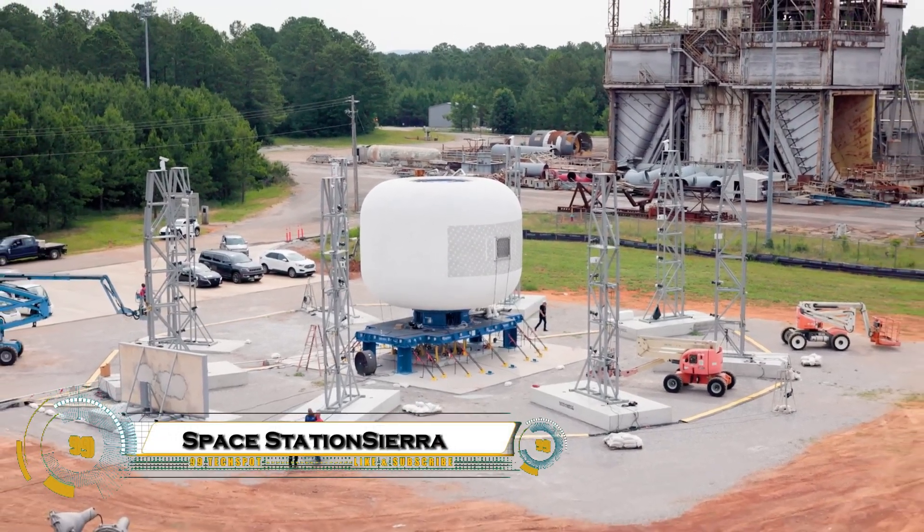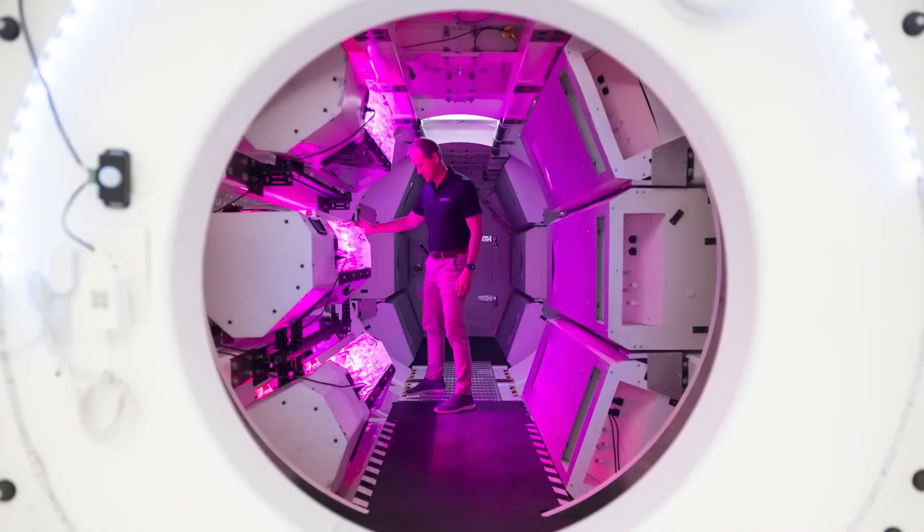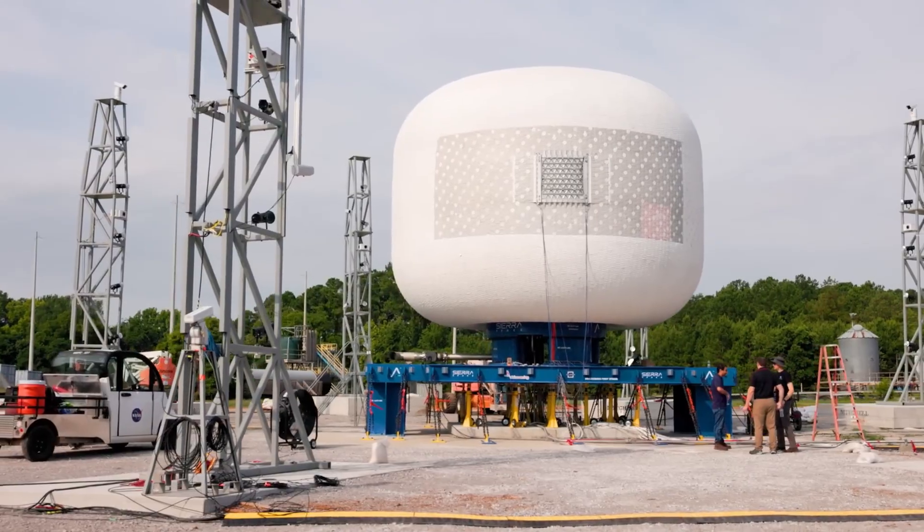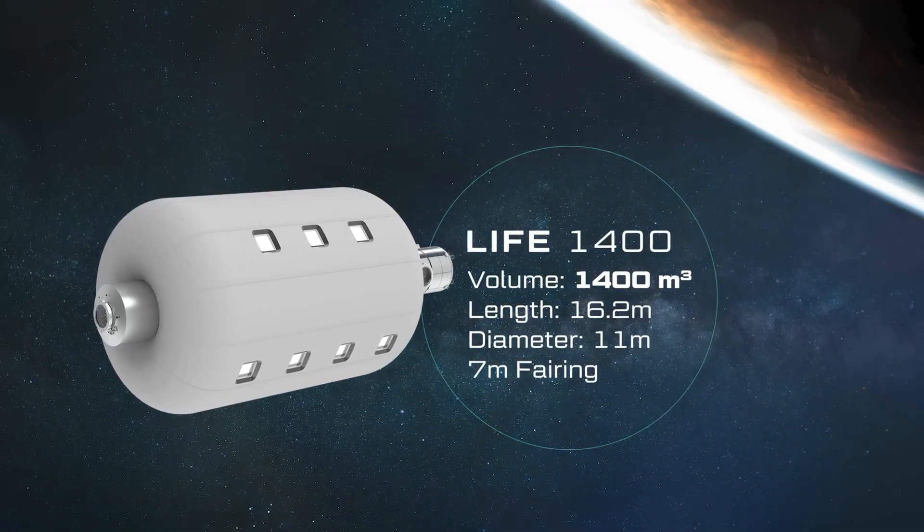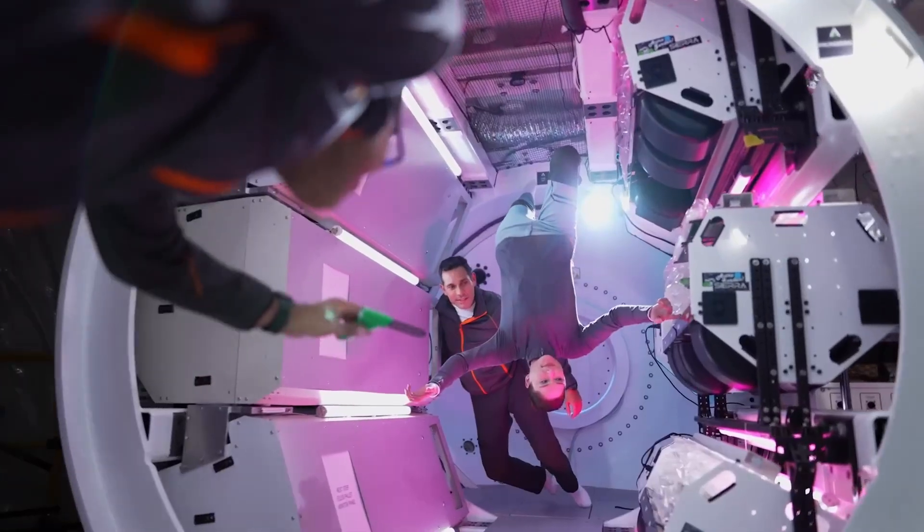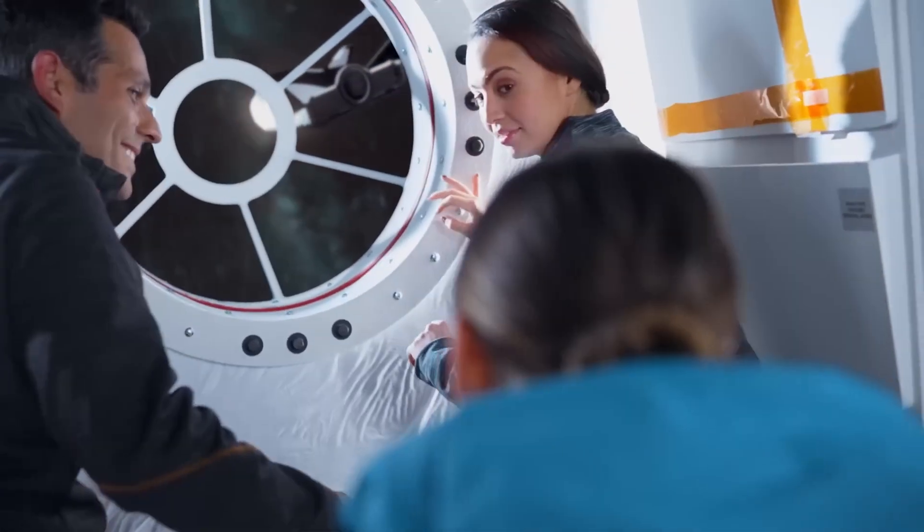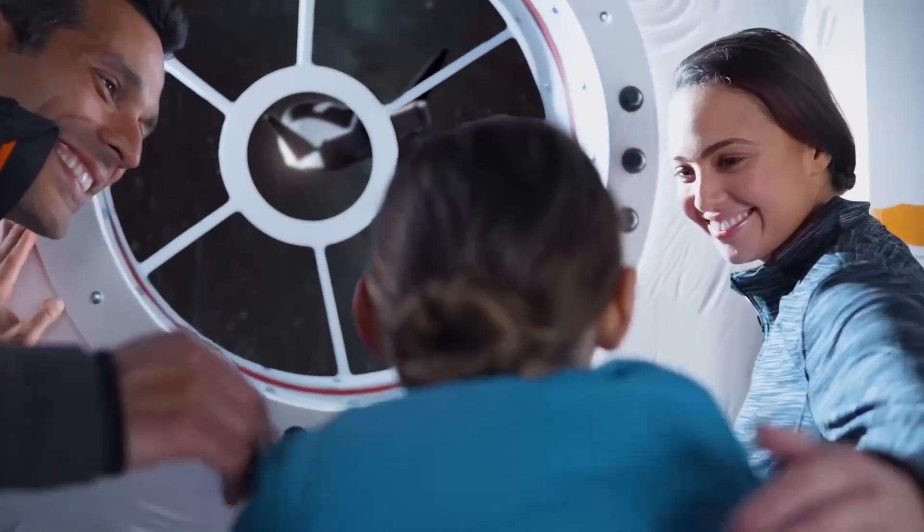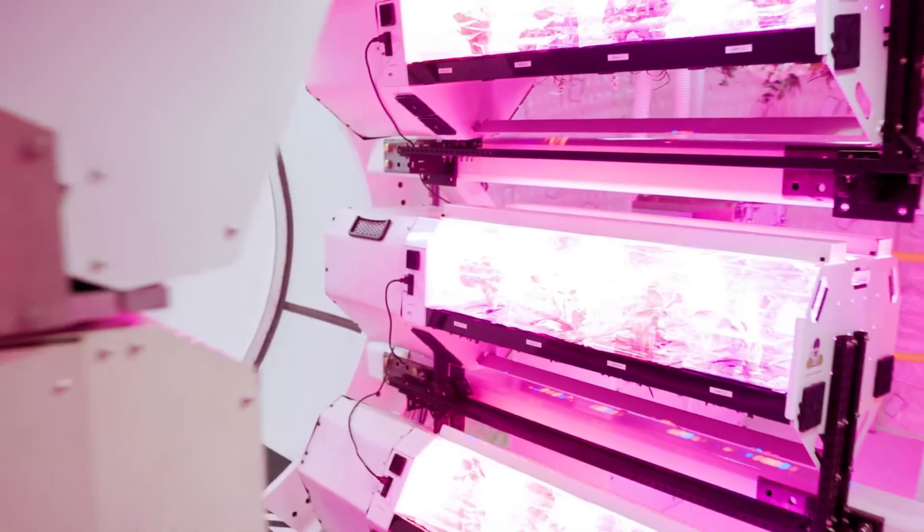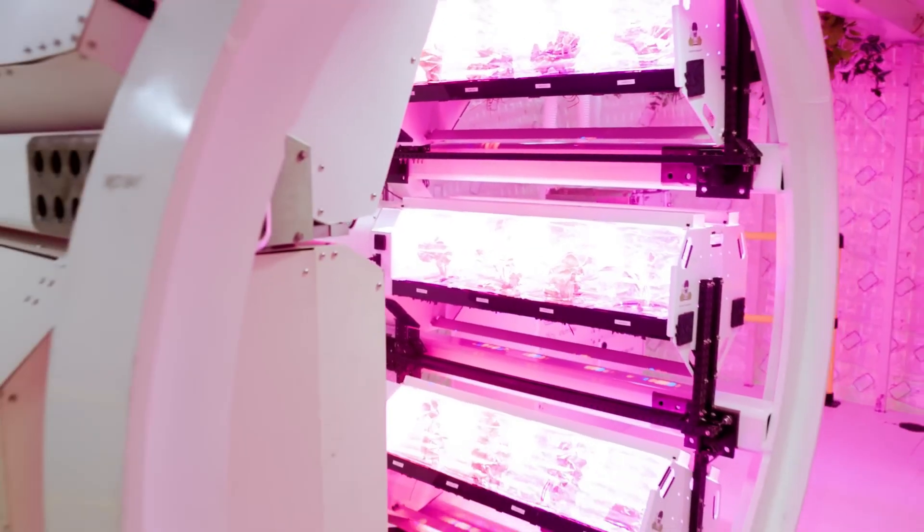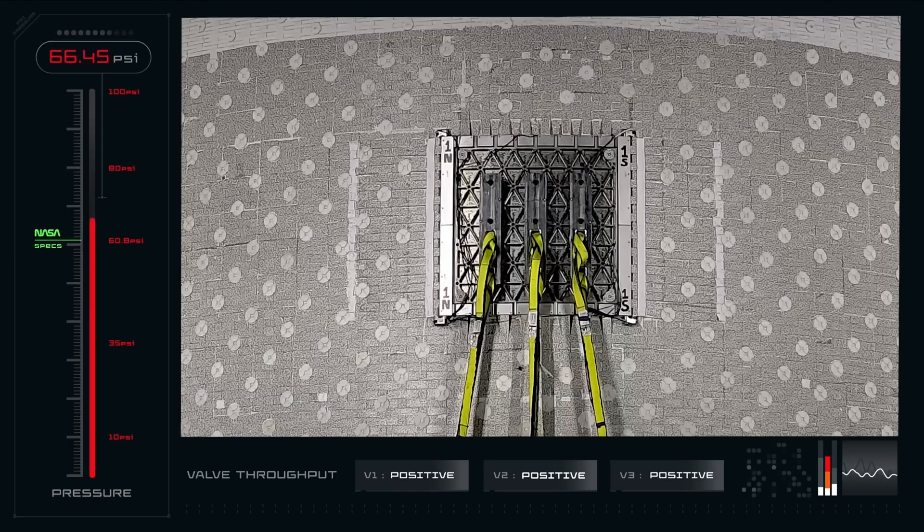Sierra Space and NASA are teaming up to develop game-changing space station technology that'll revolutionize orbital living. They're working on expandable habitat modules that inflate in space to create massive living areas while launching compactly, plus advanced life support systems that recycle air and water more efficiently than current stations. The partnership focuses on testing cutting-edge materials for harsh space environments, innovative docking mechanisms, and large-scale inflatable structures that could transform how we build in orbit.